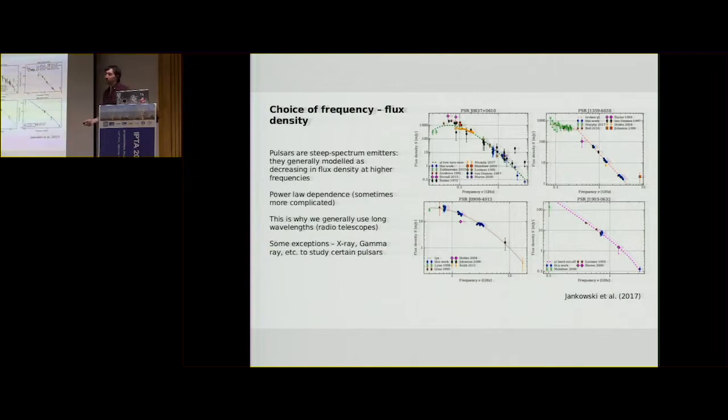So on each of these we just have a log-log plot of frequency versus flux density. So you can see that going from 100 megahertz in this pulsar to 3 gigahertz, there's a factor of a thousand drop off in flux density, so it's extremely dramatic.